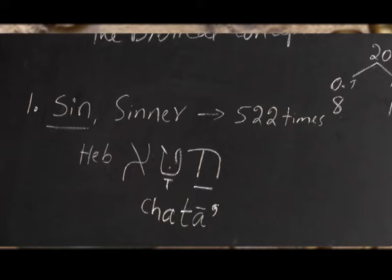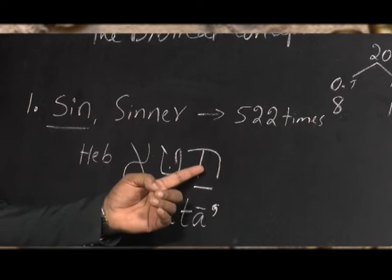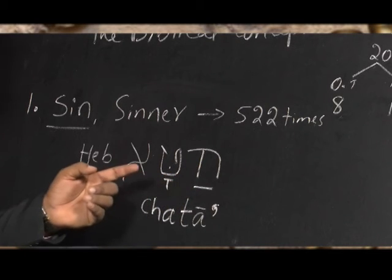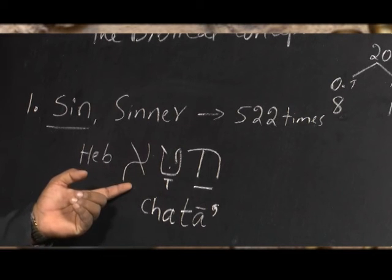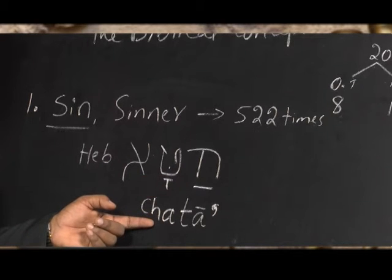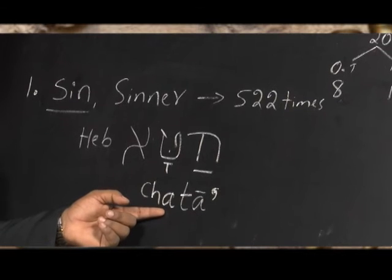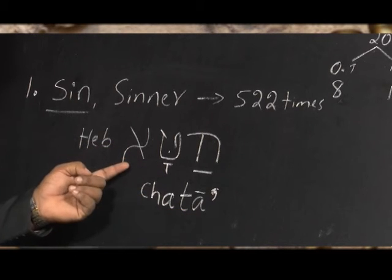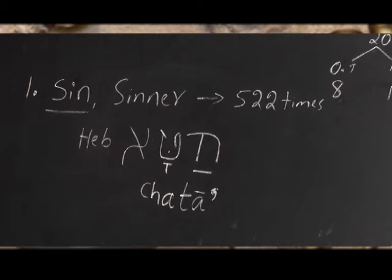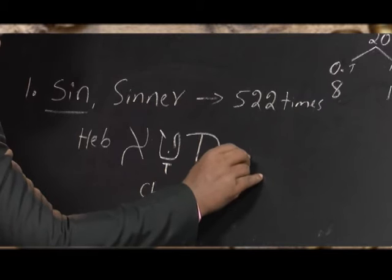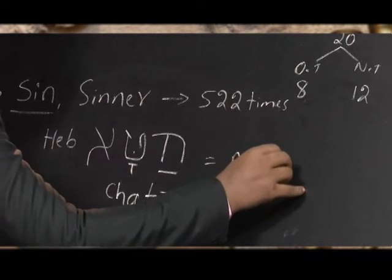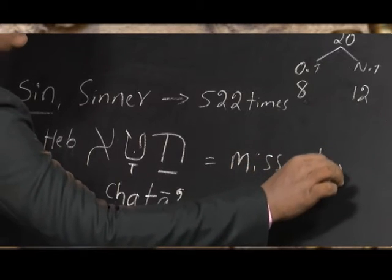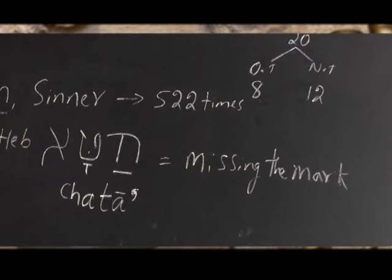Khata is the Hebrew word for sin. Het is 'ch,' Pata is 'a,' Tet is 't,' Kameks is 'a,' and Aleph has no sound — it is silent. So 'khata.' The meaning of khata is: missing the mark. It also means unintentional sin, or a crime or fault.